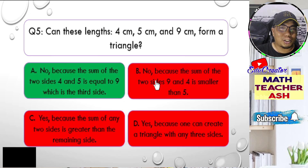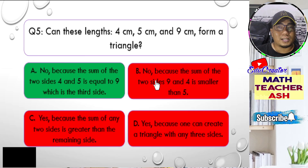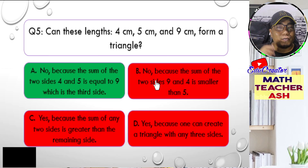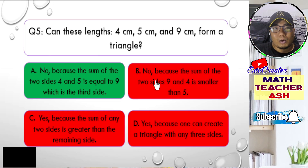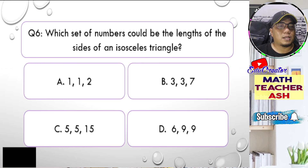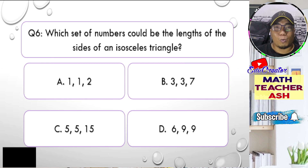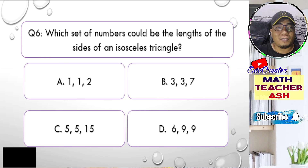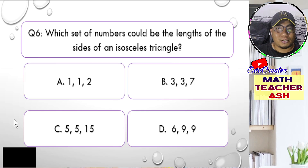If you have any questions or confusion about the topics we are discussing, kindly put them in the comment section below and I will get back to you. Now let us go to question number six. Which set of numbers could be the lengths of the sides of an isosceles triangle? Is it A, 1, 1, 2; B, 3, 3, 7; C, 5, 5, 15; or D, 6, 9, 9? I'll give you five seconds to think about your answer.